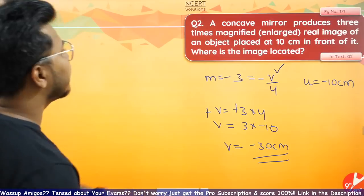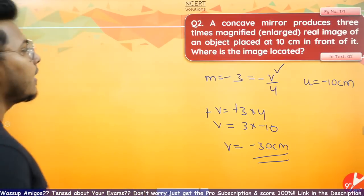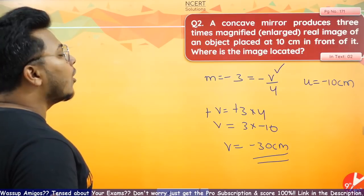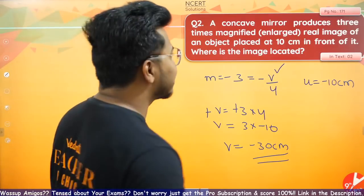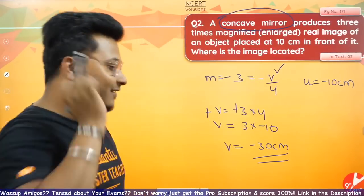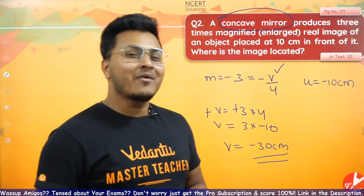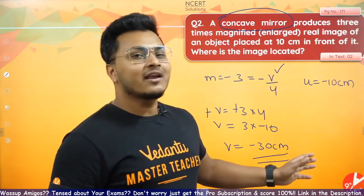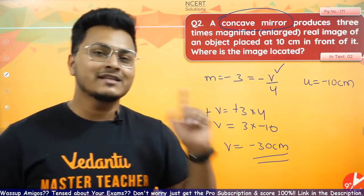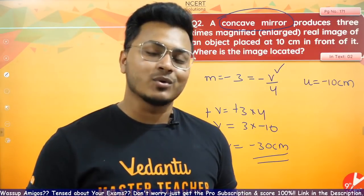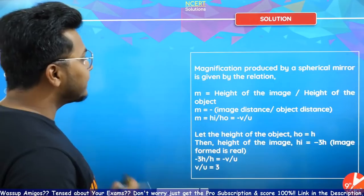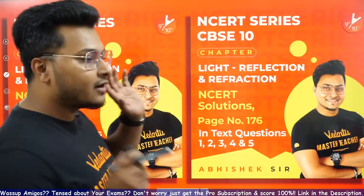Wait — re-reading the question: it says a concave mirror, not a convex mirror. It's a concave mirror producing a real image, so the image distance should indeed come out negative. The answer V equals minus 30 cm is absolutely correct. So minus 30 cm is the correct answer for question number 2.